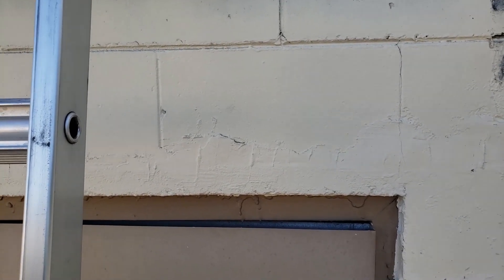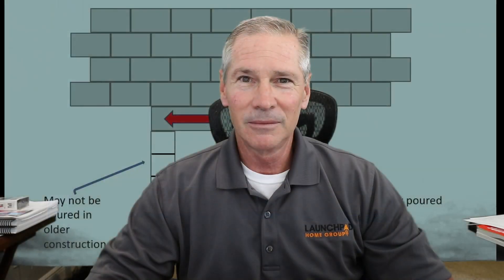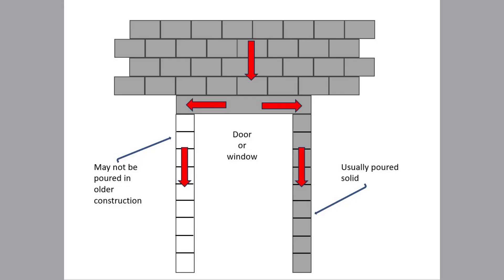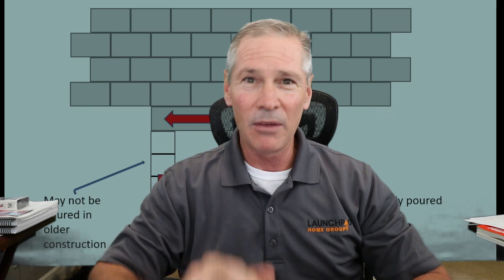This is a structural issue. As you can see, if you don't transfer the load around the new door or window you've added in the wall, the weight above that new hole will settle. It needs to be transferred around the hole.